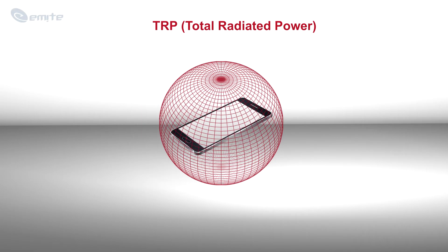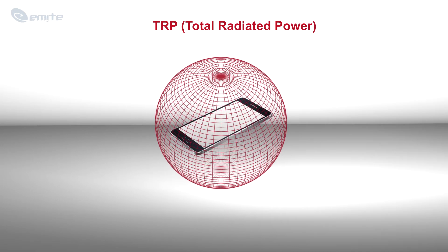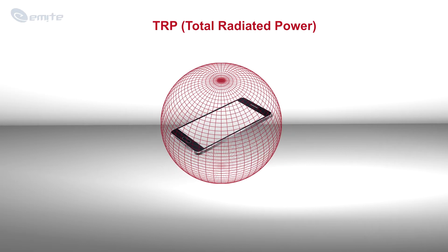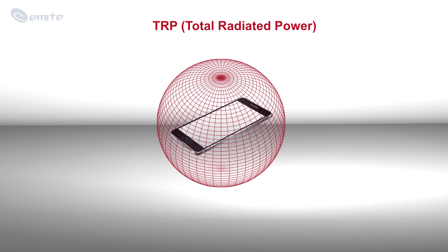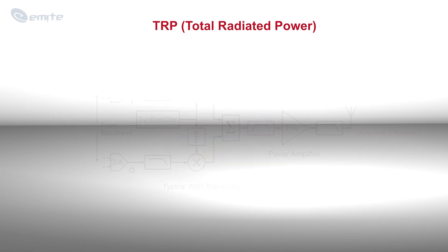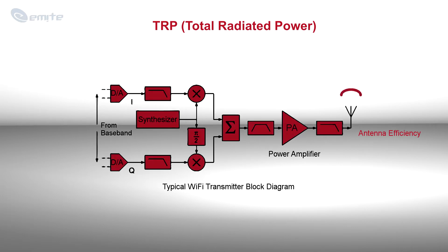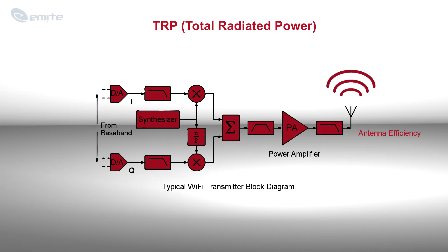TRP is the total RF channel power radiated by a wireless terminal, and it is calculated by integrating the measured effective isotropic radiated power data over the measurement sphere. The total radiated power from a cellular phone depends on how much power is conducted from power input to the antenna, and how good the antenna is at transforming that to radiated power — in other words, the antenna's efficiency.